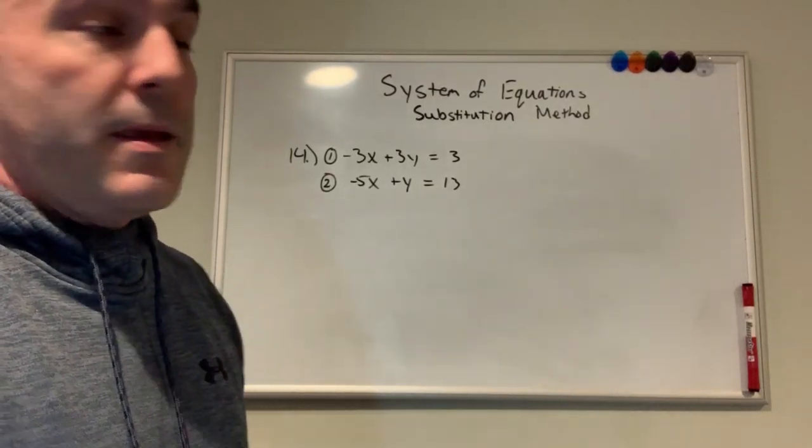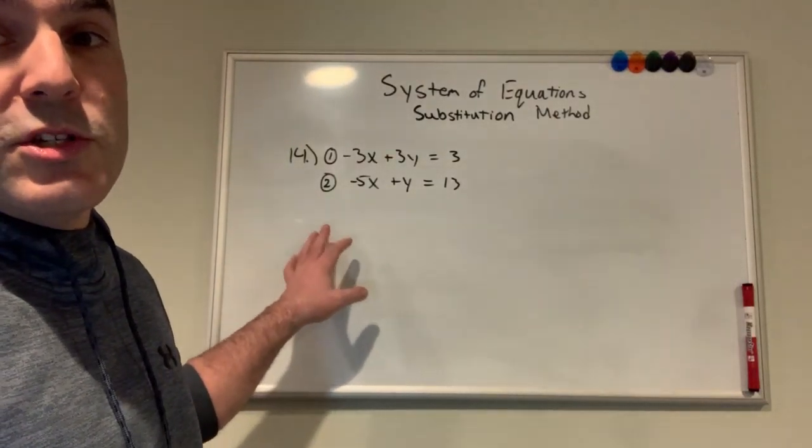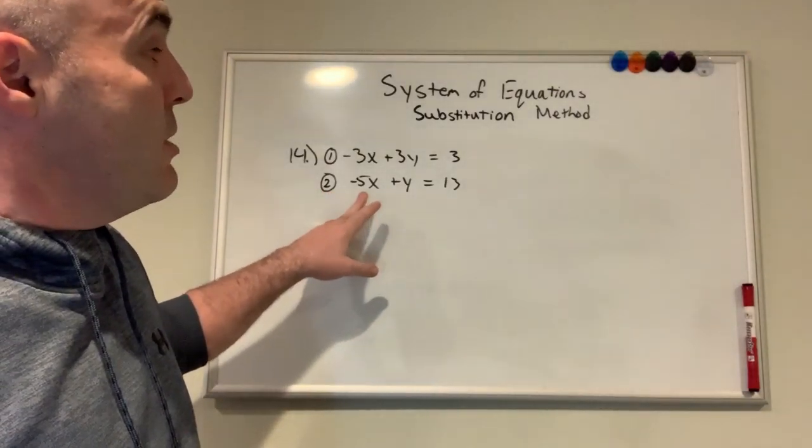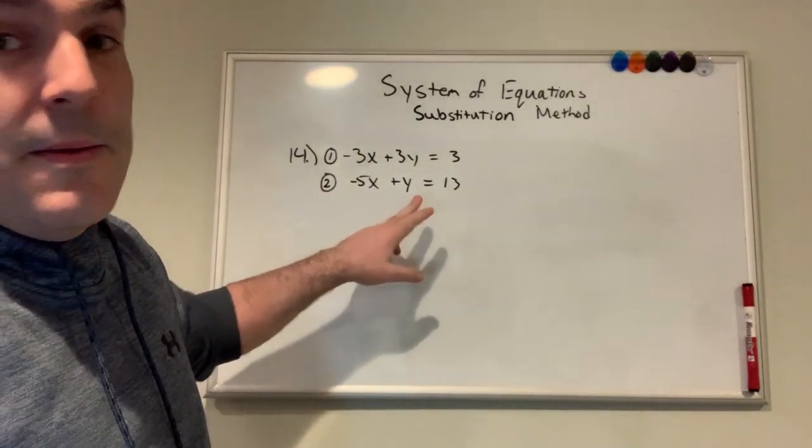Okay, moving on to problem 14. Again, we have a system of equations and two variables. The first equation is negative 3x plus 3y equals 3, and the second equation is negative 5x plus y equals 13.